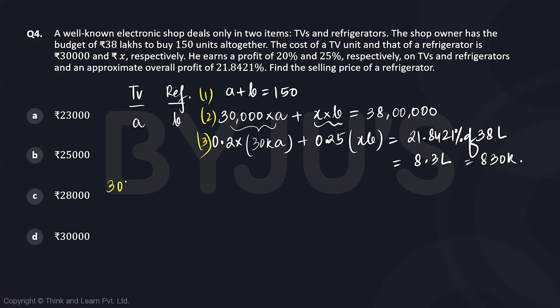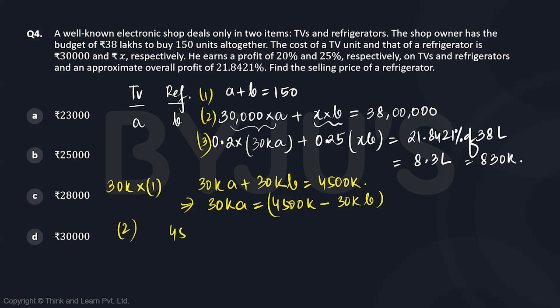Let's multiply the first equation by 30,000. We get 30,000A plus 30,000B equals 30,000 times 150, which is 4,500,000. Let's substitute this into the second equation to eliminate 30,000A. So 30,000A can be written as 4,500,000 minus 30,000B.